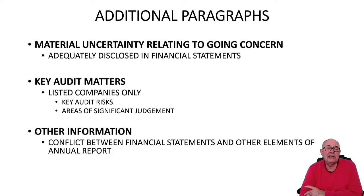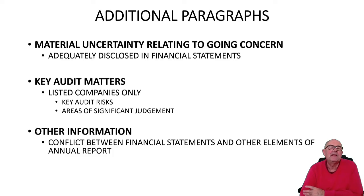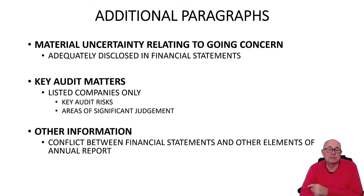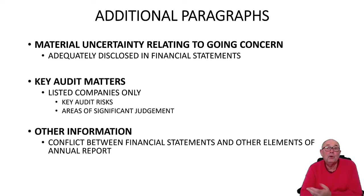The second additional paragraph, key audit matters, is only required by companies that are quoted on a stock exchange. It's an extremely useful disclosure in the audit report where the auditor is able to highlight which were the main areas of audit risk — perhaps in a retail company that sells food and clothes, if the clothes are not selling very well, the auditor might highlight that as an area of risk. Also areas of significant judgment, such as depreciation, provisions, and debts that may not be paid. This helps to narrow the expectation gap between what the auditor does and what the user thinks the auditor does.